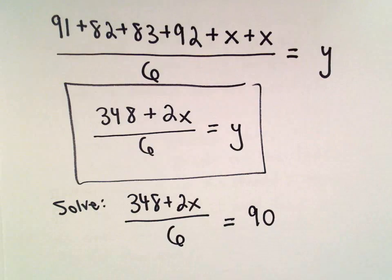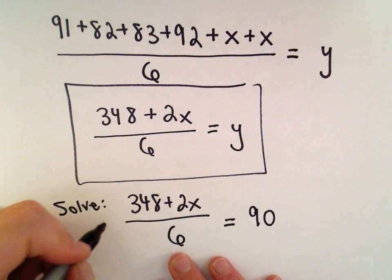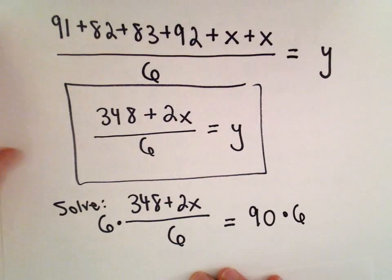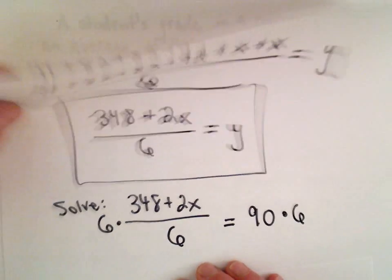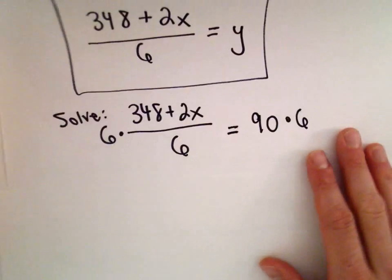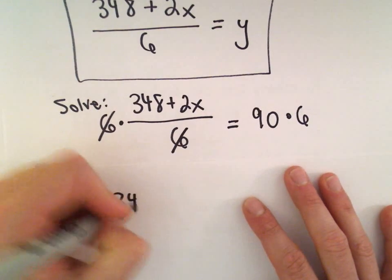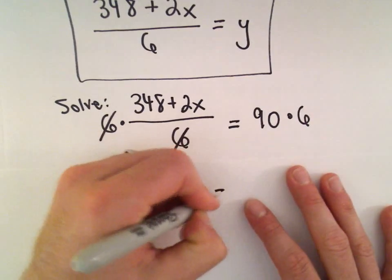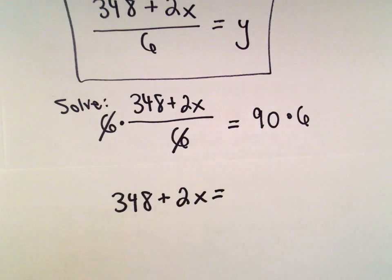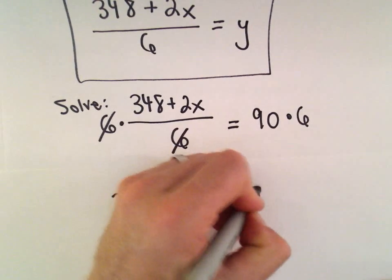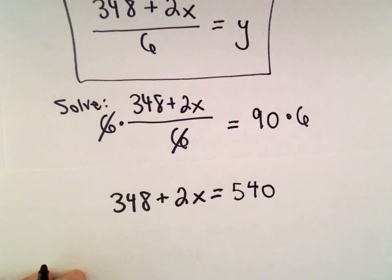The first thing I would do is get rid of the 6, and to do that I would multiply both sides by 6. Since we're dividing by 6, I'll multiply by 6, so the 6s will cancel out. We'll have 348 plus 2x equals 90 times 6. Well, 9 times 6 is 54, so we can just tack on an extra zero.